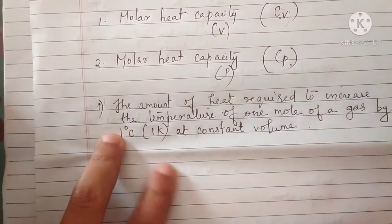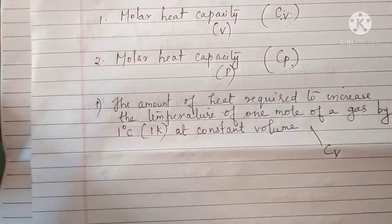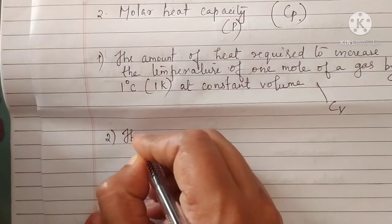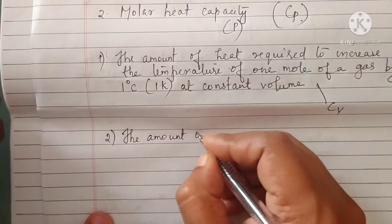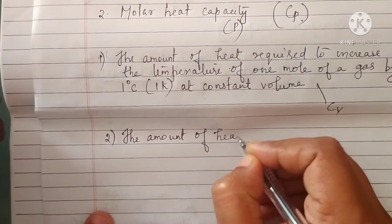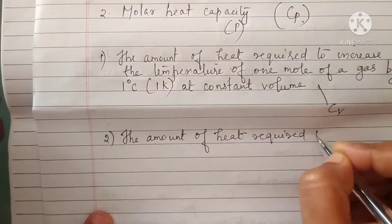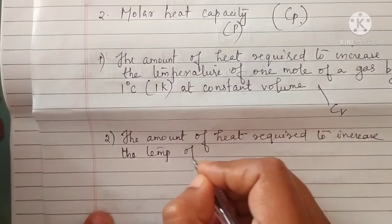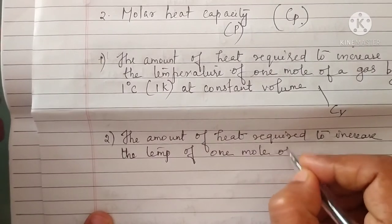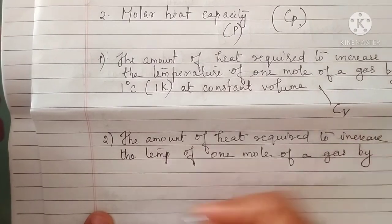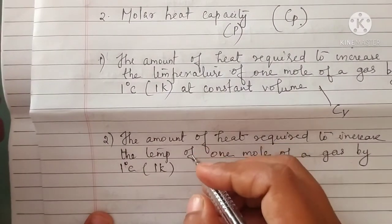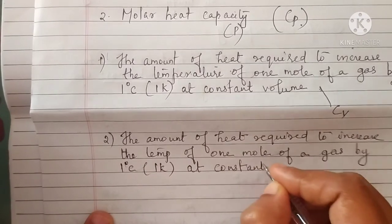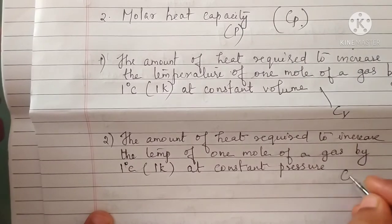The second one is molar heat capacity at constant pressure, Cp, defined as the amount of heat required to increase the temperature of 1 mole of a gas by 1 degree Celsius or 1 Kelvin, at constant pressure.